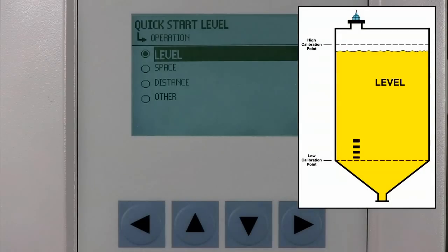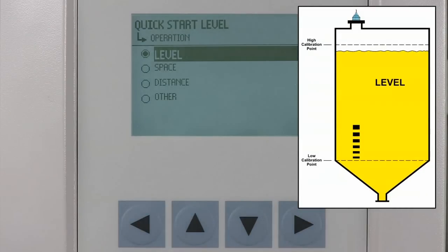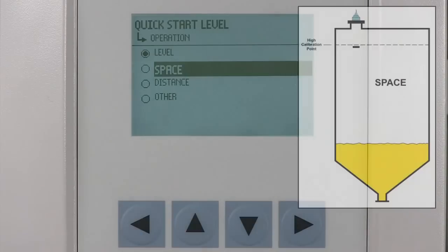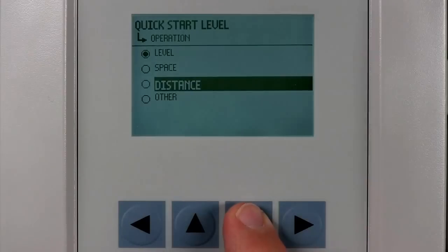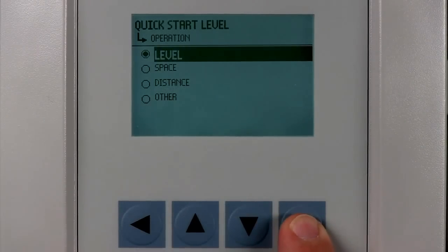The level mode measures the height of the material in the vessel from the low calibration point to the high calibration point. The space mode measures the distance from the high calibration point to the material surface. The distance mode measures the distance from the transducer face to the material surface. In our application, we will select the level mode.